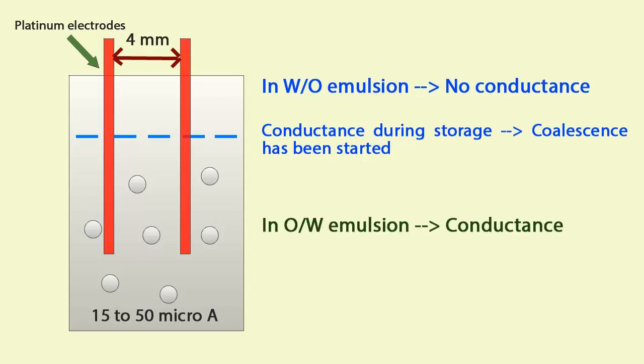In the case of oil and water emulsion, conductance is observed and there is less resistance because water is good conductor of electricity. During storage if resistance is increased, it indicates that coalescence or phase separation process has been started and it indicates instability in emulsion.